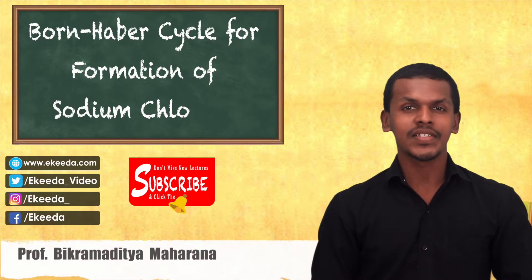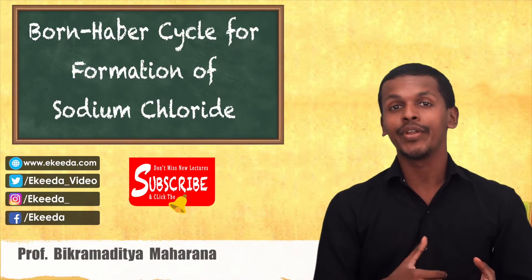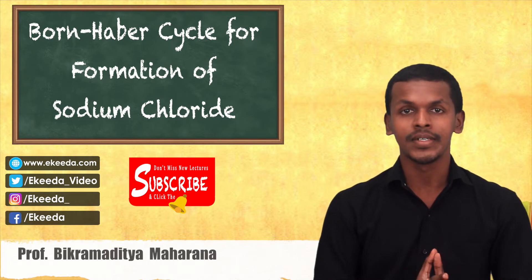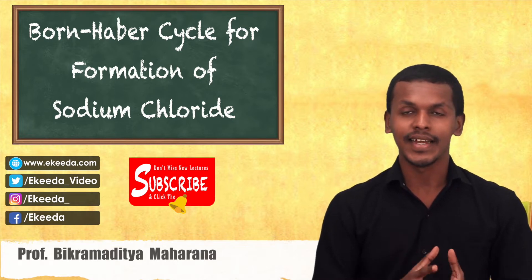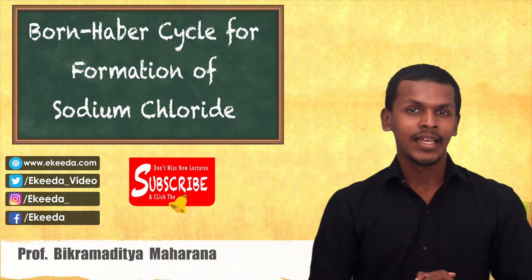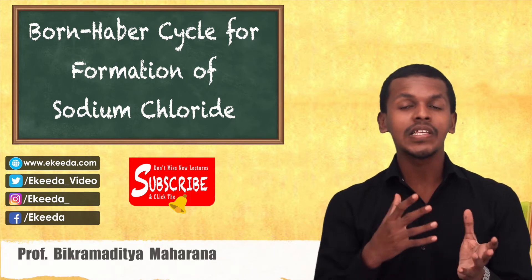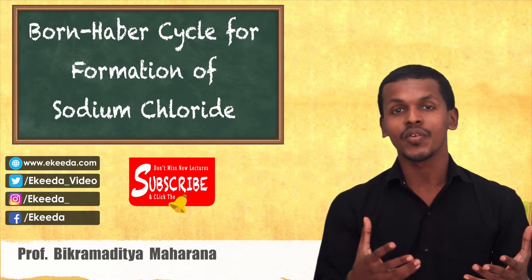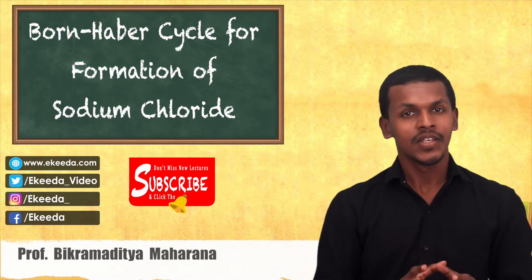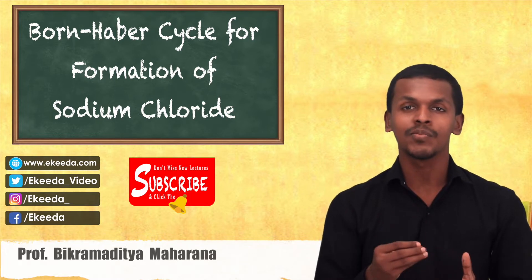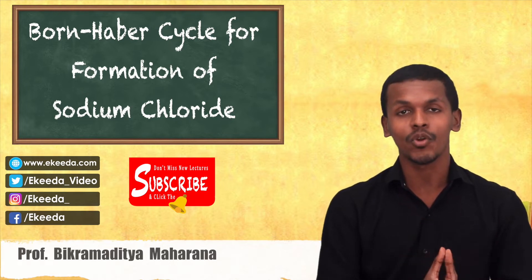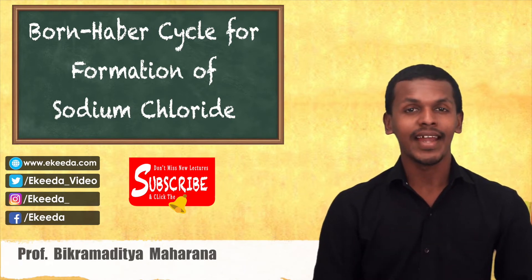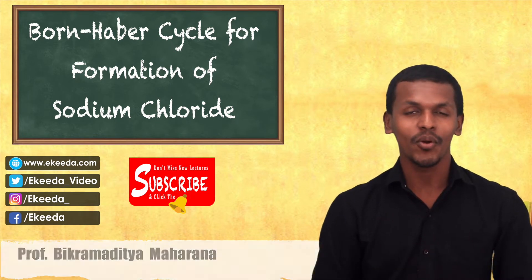Hi friends, in the previous lecture we discussed about the ionic bond, and in that case we took an example of the formation of NaCl — how the NaCl bond is formed. In actual practice there are various steps that take place. So now we are going to talk about the Born-Haber cycle for the formation of NaCl, and let us see how ionic bonds are formed.